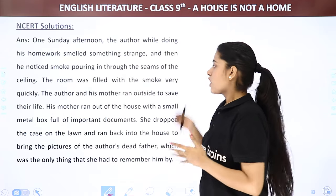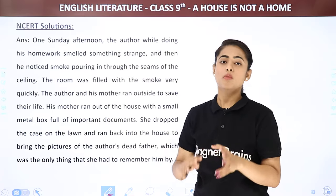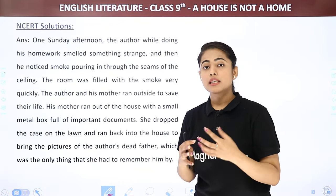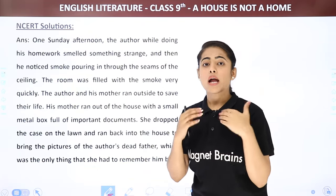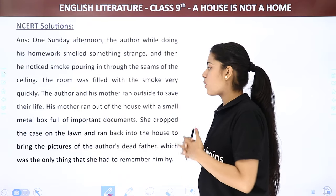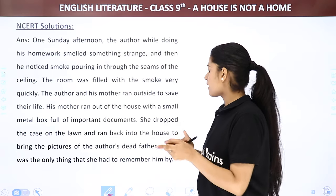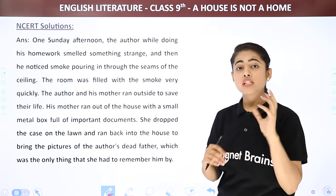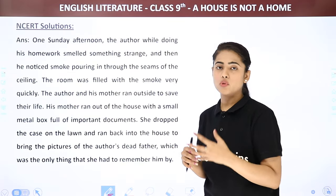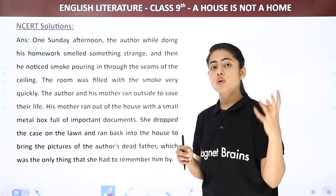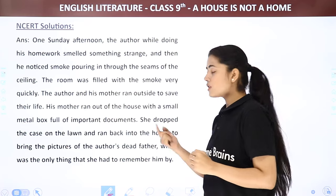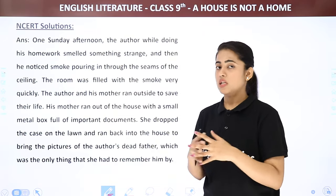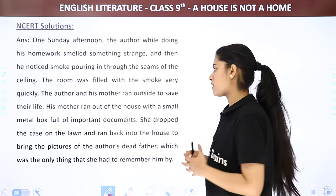The author and his mother ran outside to save their lives. It was so smoky in the room that they could hardly see anything; they tried to find the front door and came outside. His mother ran out with a small metal box full of important documents. She dropped the case on the lawn and ran back into the house to bring the pictures of the author's dead father, which was the only thing she had to remember him by. The author's mom ran back to bring the medal box with all personal documents, and then again went into the house to bring back the photographs and letters of her husband, whom she lost when the author was very young.